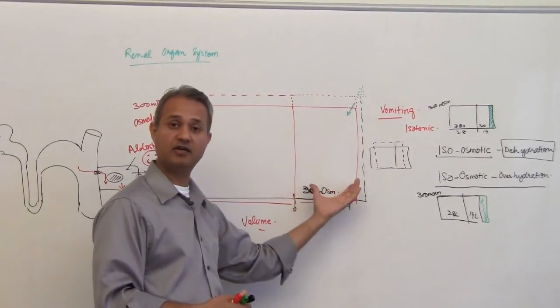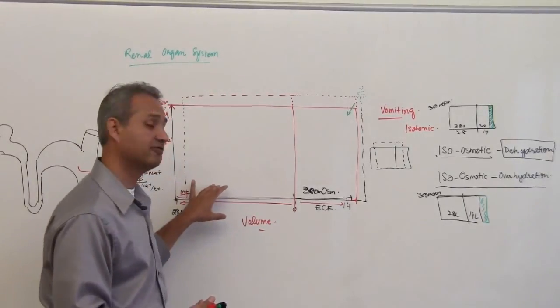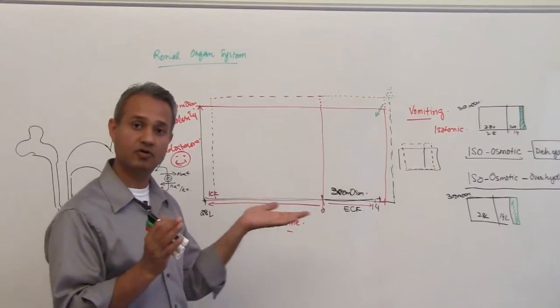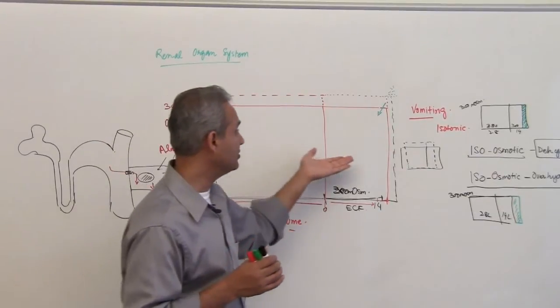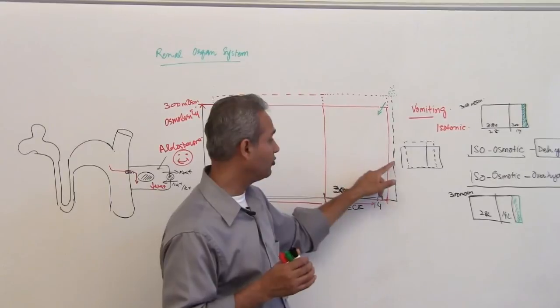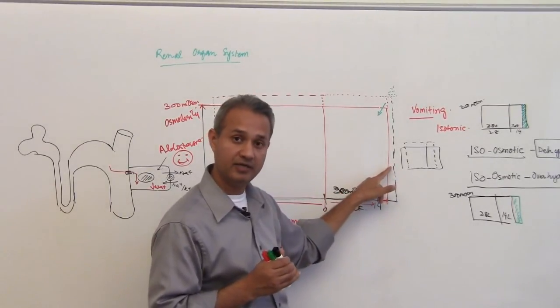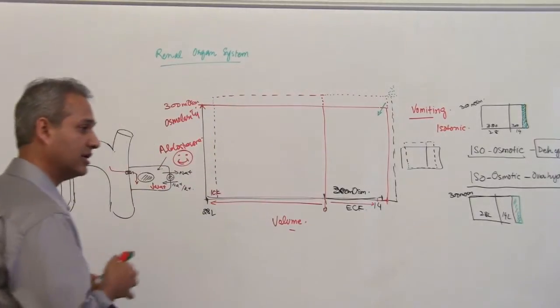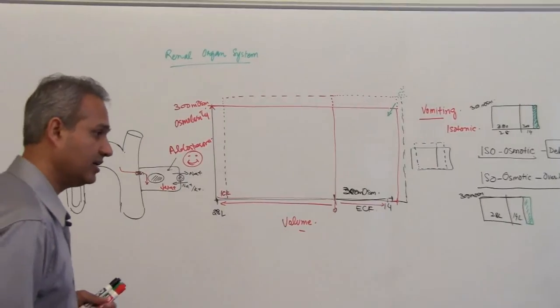So the extracellular compartment has increased in size, intracellular fluid compartment has shrunk, osmolarity has gone up. What will this be? This will be hyperosmolar overhydration. So this is the hyperosmolar overhydration. That is the osmolarity.